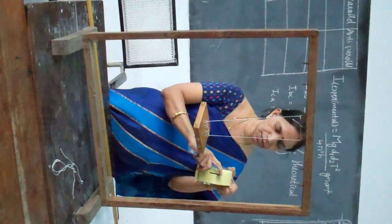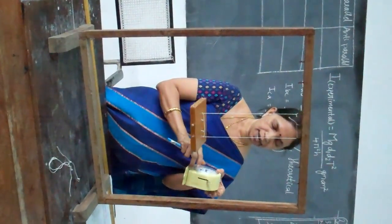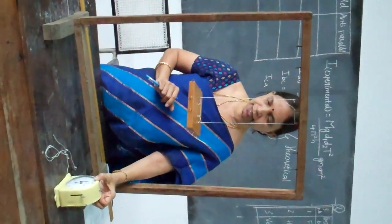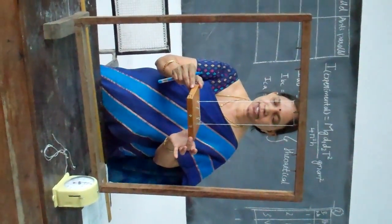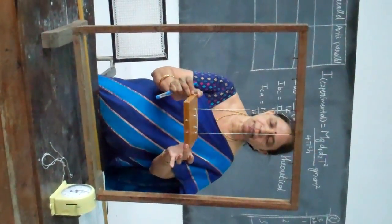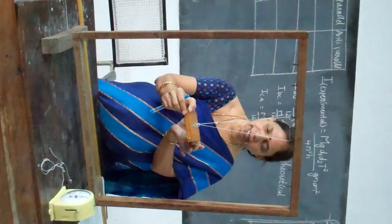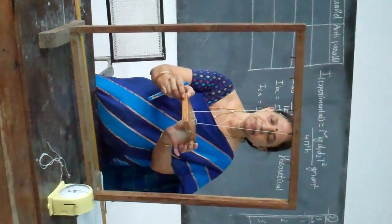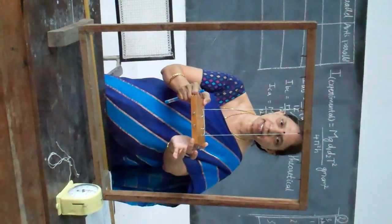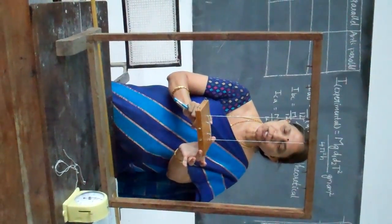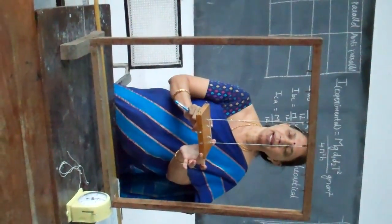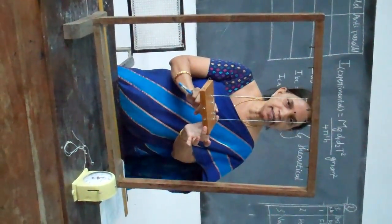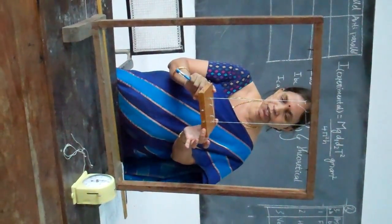Start the stopwatch and find the time taken to complete 20 oscillations. After 20 oscillations, repeat this experiment for another trial. For every experiment, take a minimum of two trials. Find time t1 and time t2, find the average time, and measure the time period by dividing the total time by the number of oscillations.